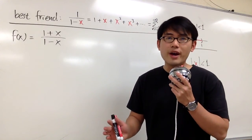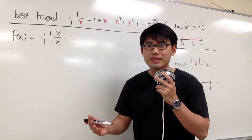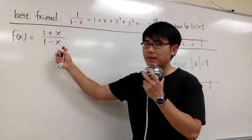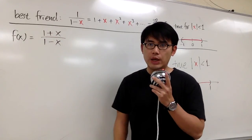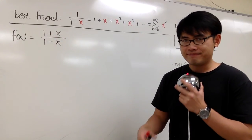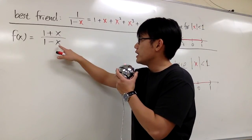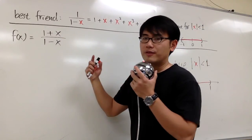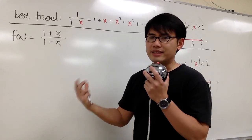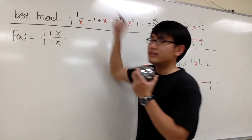This is going to be the third way on how we can write the power series expansion for (1+x)/(1-x), and we'll just be focusing on the form. Here we have x to the first in both numerator and denominator, and then we have two things on the top. That's the issue, because our best friend only has one thing on the top.